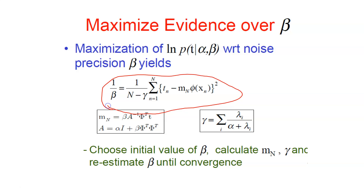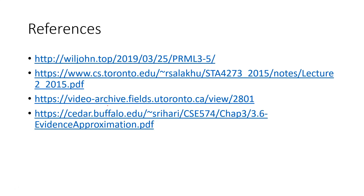This entire process is called maximizing evidence, or evidence approximation. This is a very important topic and can be asked in exams — specifically, how does Bayesian regression derive the parameters alpha and beta using iterative procedures. These are the references. Thank you.